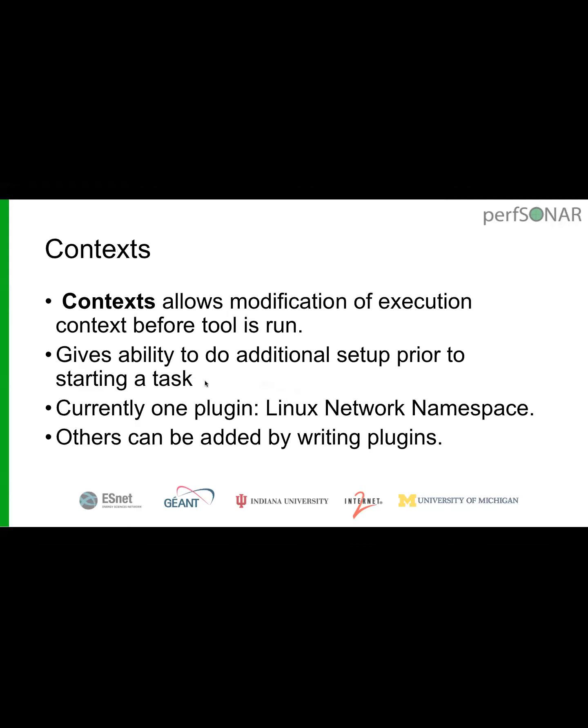We're also adding a feature called Contexts in 4.0.2 to satisfy a specific use case from one partner. They have a multi-domain VPN product with machines having multiple Linux network namespaces wired into each domain. Instead of running one host per domain, they wanted to switch to the appropriate namespace before a measurement runs. Currently there is one plugin that changes namespaces before measurement; this is done via a plugin mechanism so additional context types can be added later.